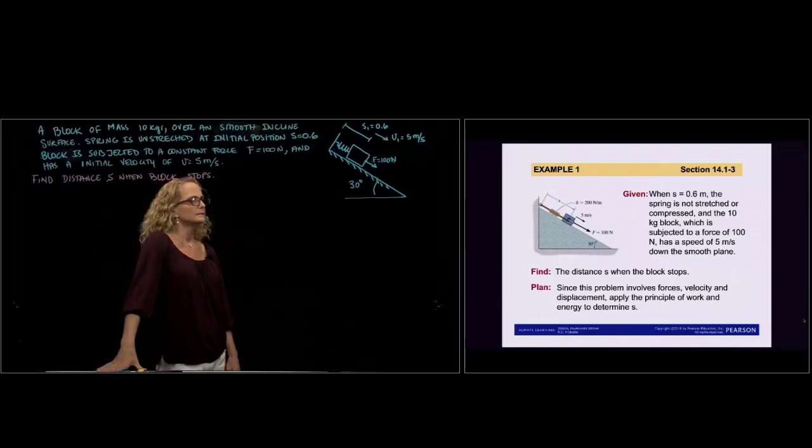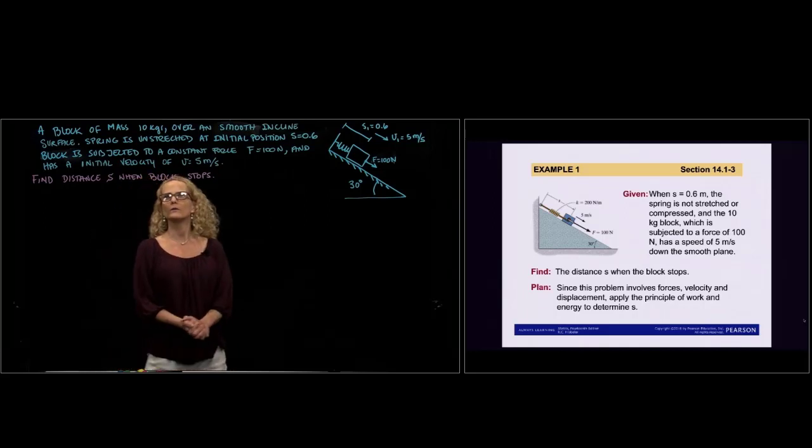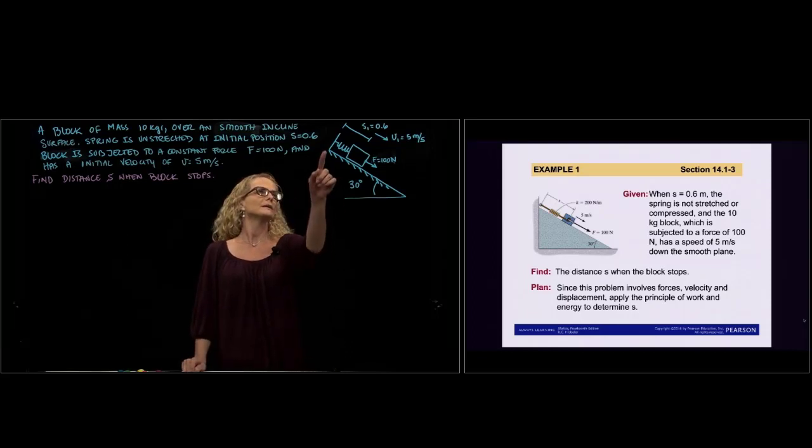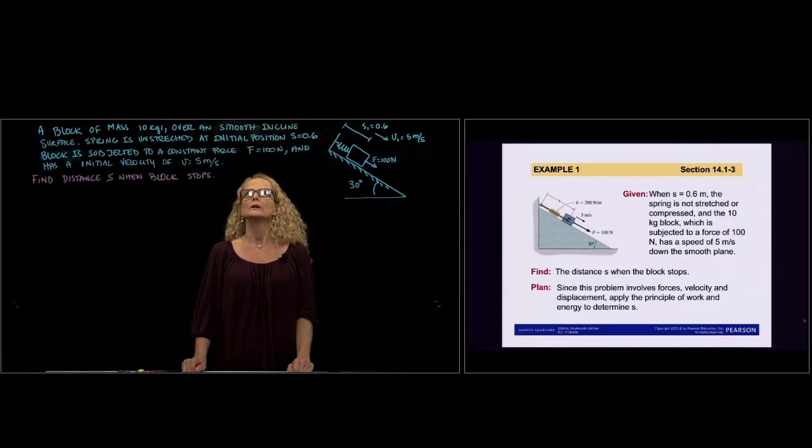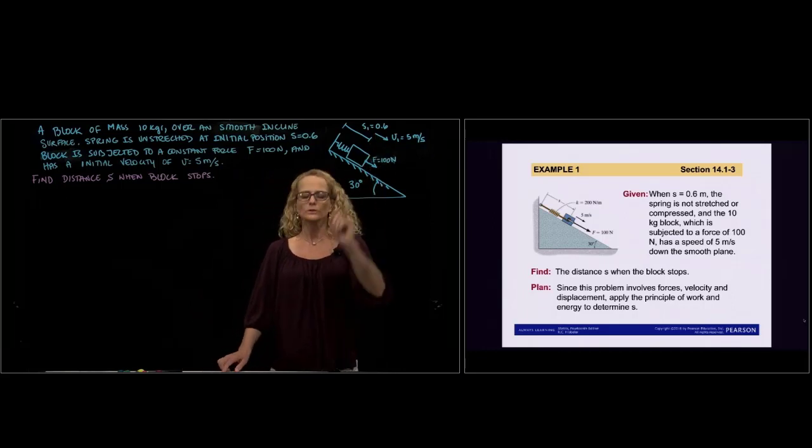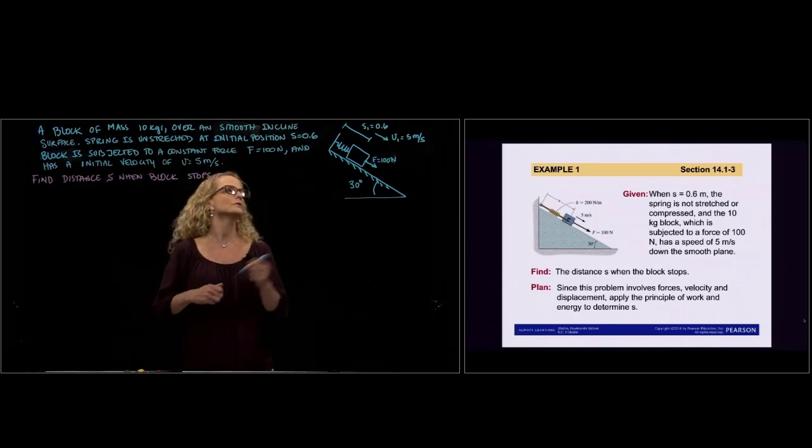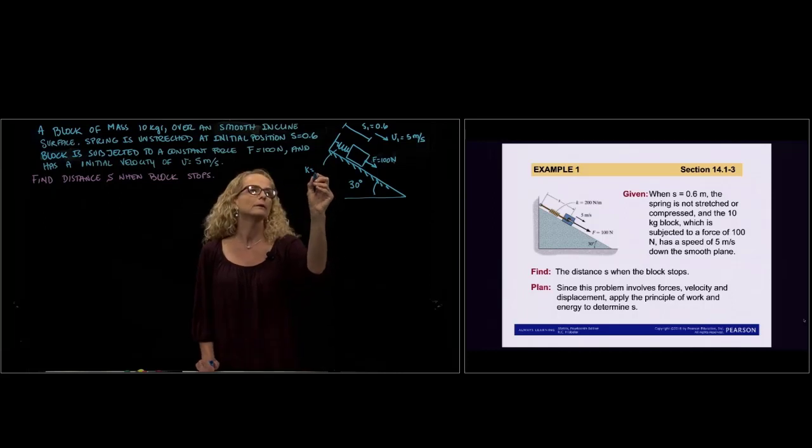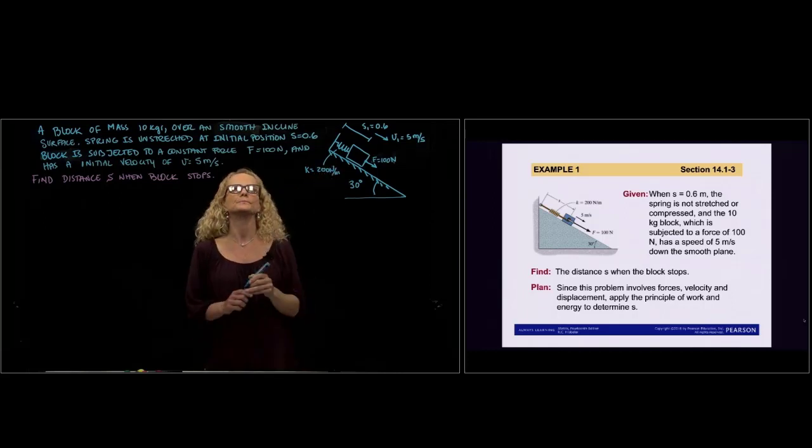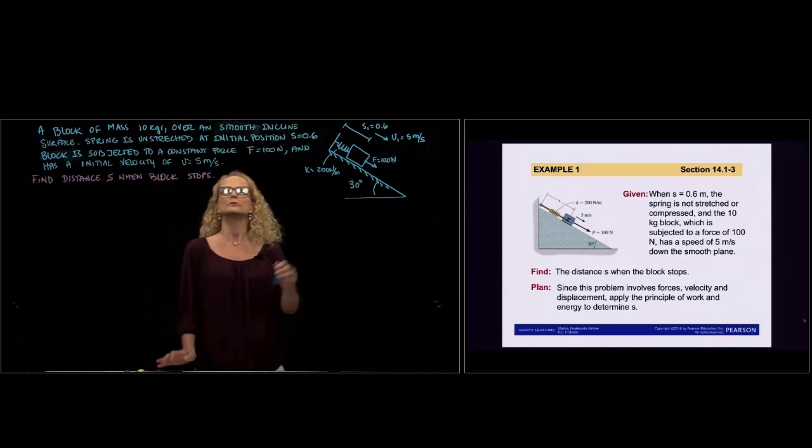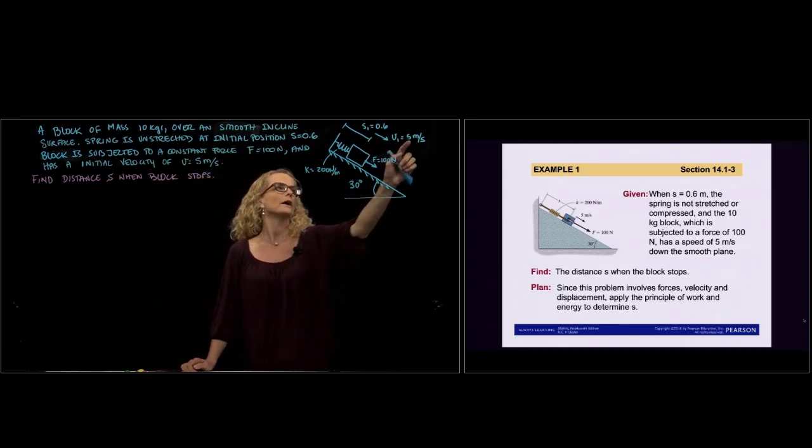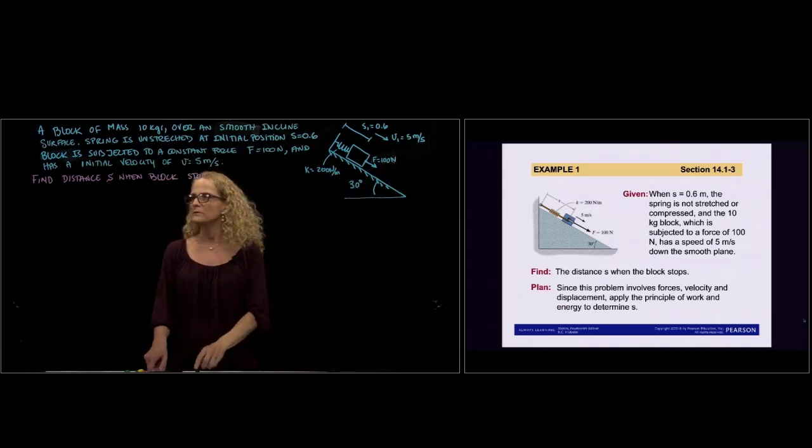We are in Chapter 14. This is example number one of Chapter 14, and we have a block of mass 10 kilograms on a smooth inclined surface. The spring here is stretched at the initial position by 0.6 meters, and the constant of the spring is 200 newton meters. The block is also subjected to a constant force of 100 newtons and has an initial velocity of 5 meters per second.